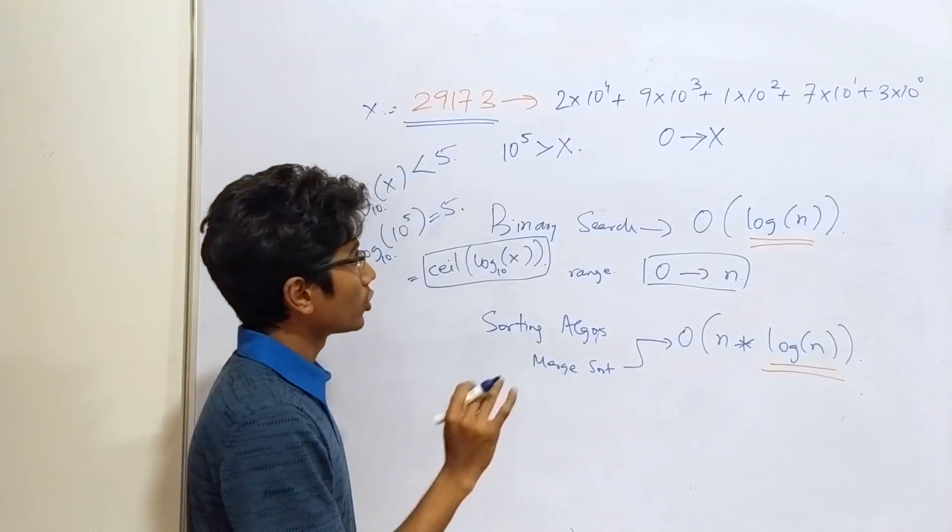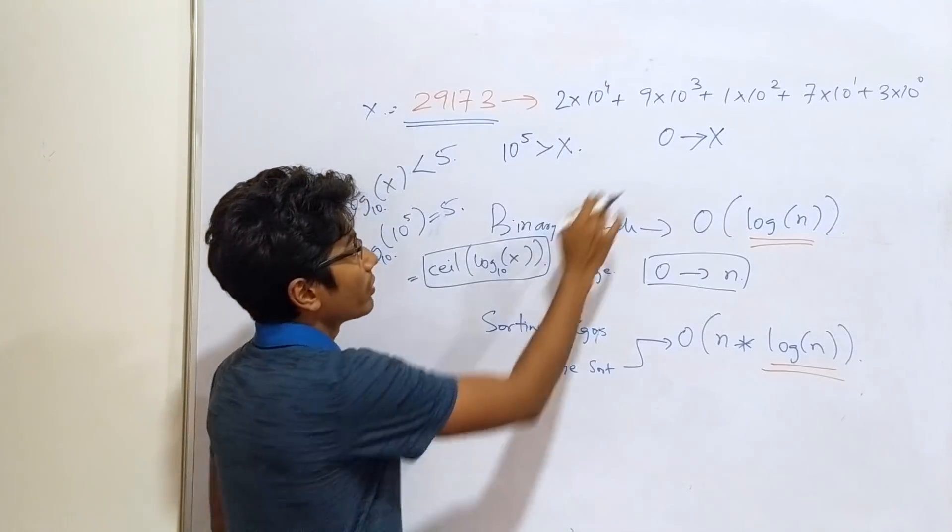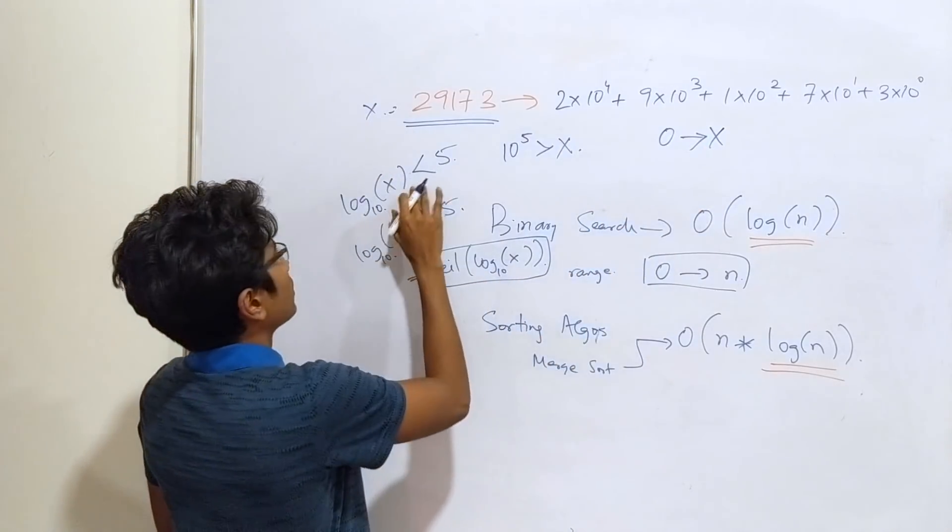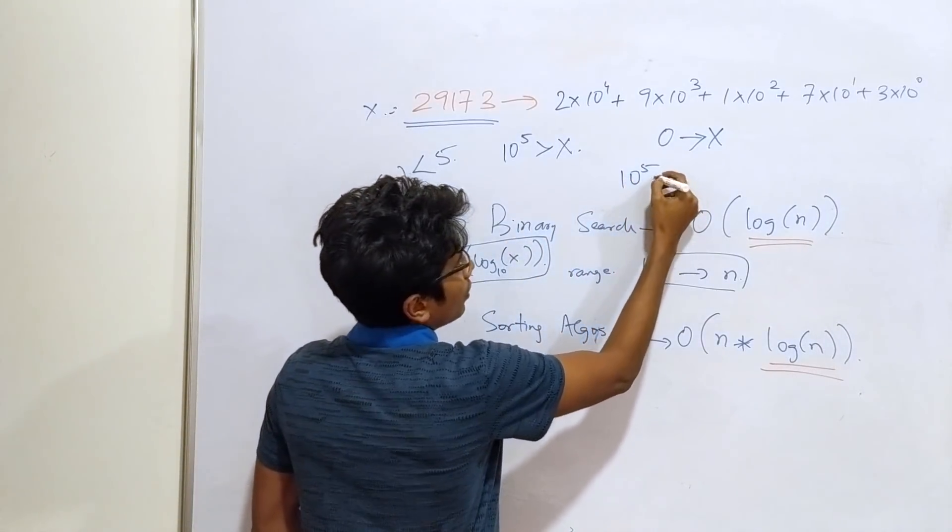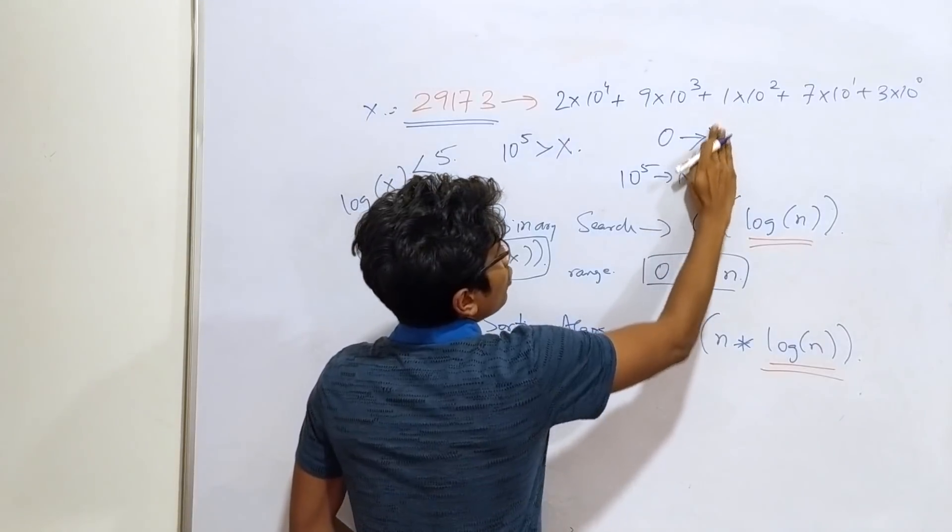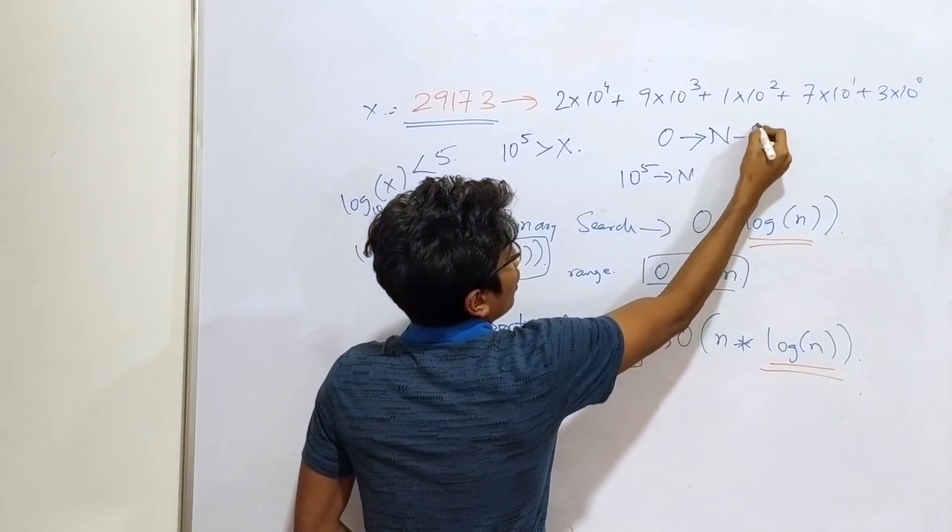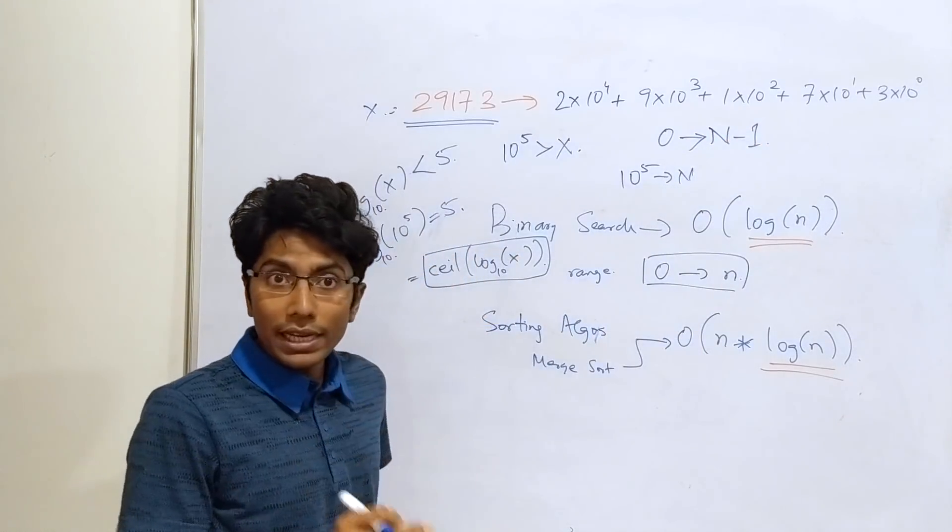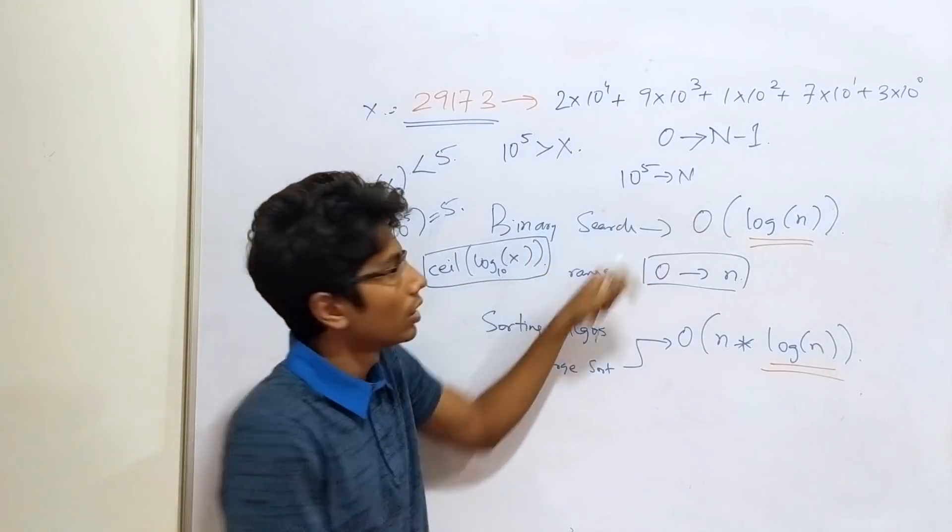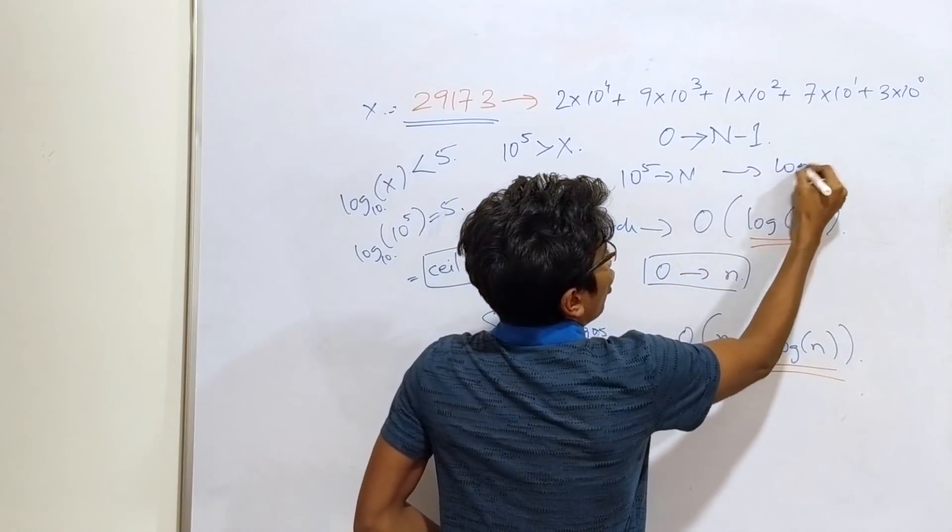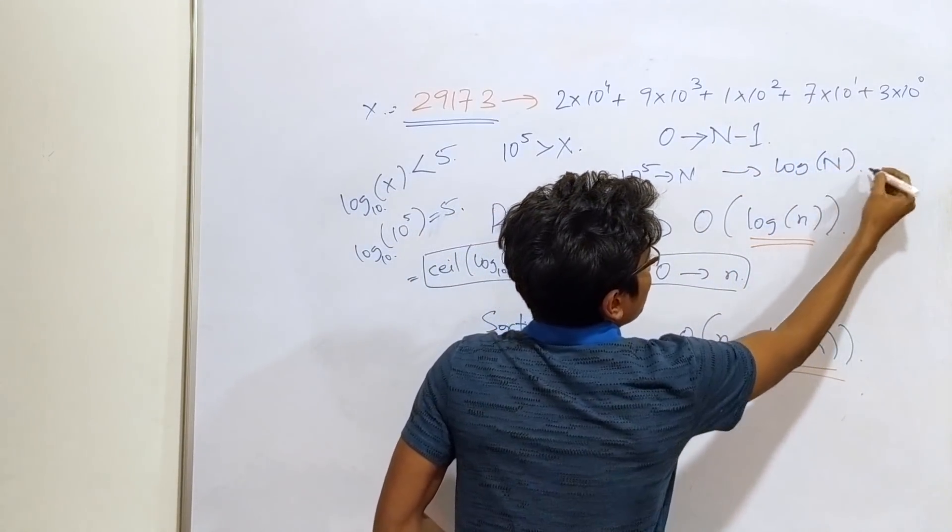is the minimum number of digits you need to uniquely identify the number x in the range 0 to x. Right? I want to make that very very clear. To uniquely identify a number between 0 to let's say this is 10 raised to the power 5 is n.